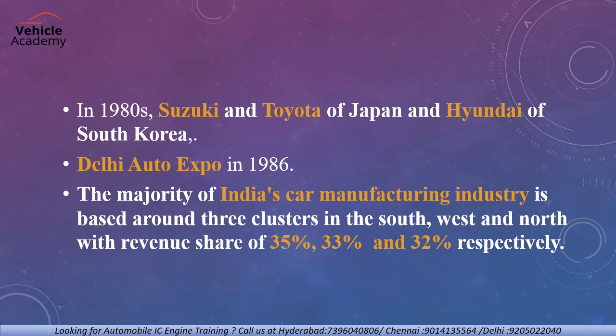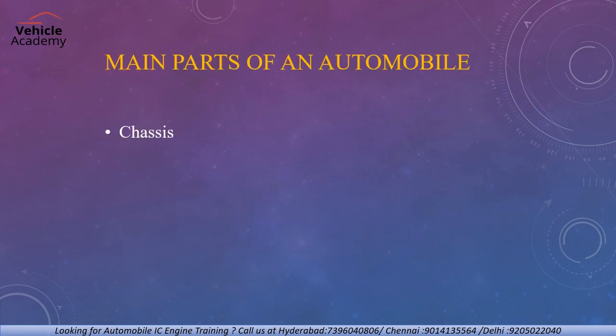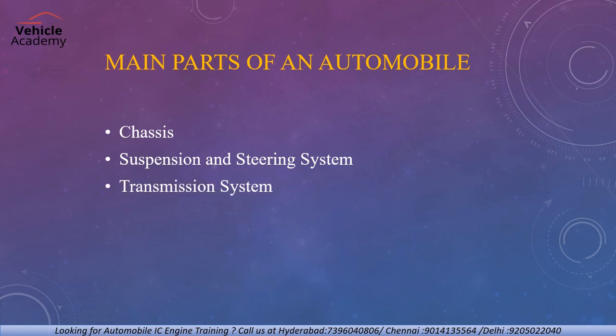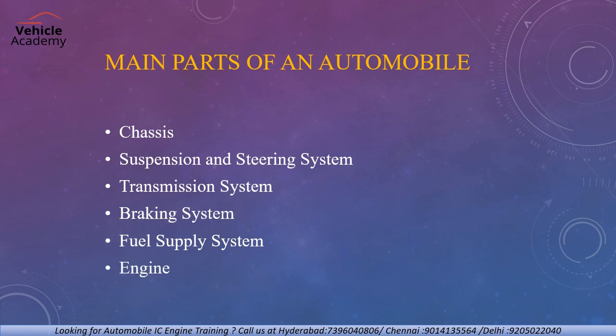Now we'll discuss the major parts of an automobile. The main part is the chassis — it is the single main unit carrier where we implement all the major parts of the vehicle. Parts of the chassis include the suspension and steering system, transmission system, braking system, fuel supply system, and engine.